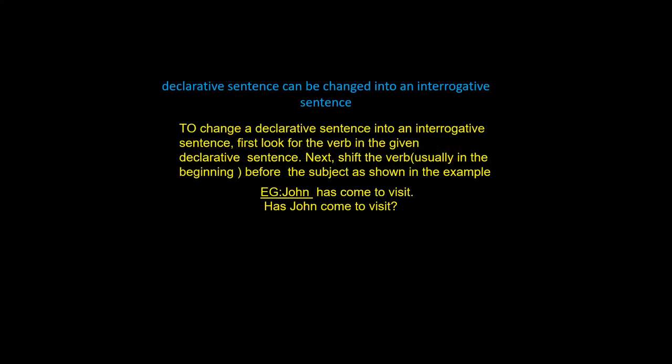A declarative sentence can be changed into an interrogative sentence. To change a declarative sentence into an interrogative sentence, first look at the verb in the given declarative sentence. Next, shift the verb usually to the beginning, before the subject, as shown in the example.